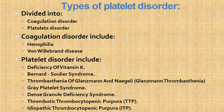Types of platelet disorders: we can divide into coagulation disorders and platelet disorders. Coagulation disorders include hemophilia and von Willebrand disease. Platelet disorders include deficiency of vitamin K, Bernard-Soulier syndrome, Glanzmann's thrombasthenia, gray platelet syndrome, dense granule deficiency syndrome, thrombotic thrombocytopenic purpura, and idiopathic thrombocytopenic purpura.